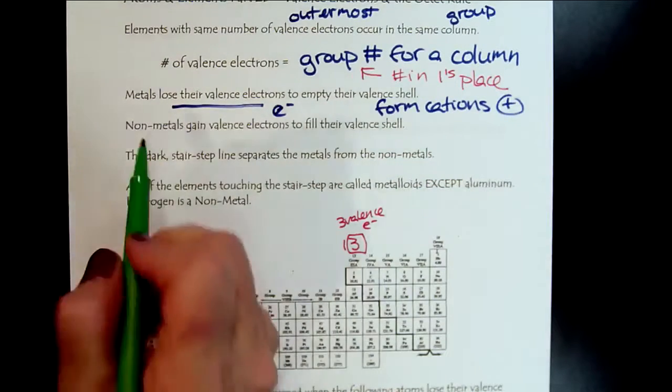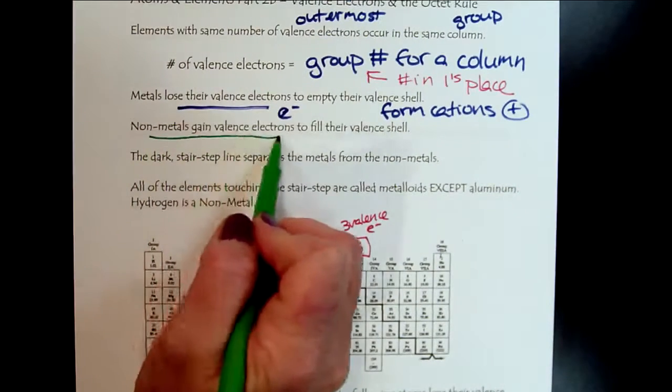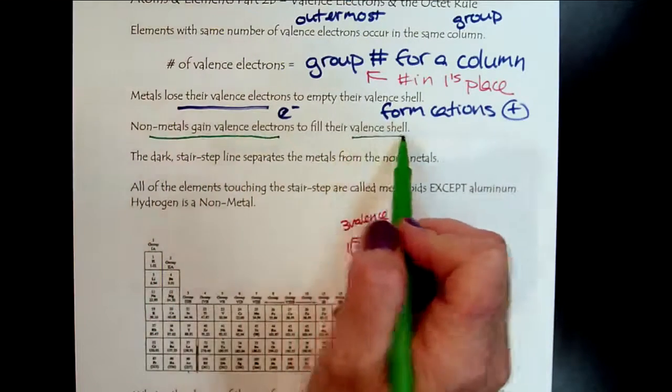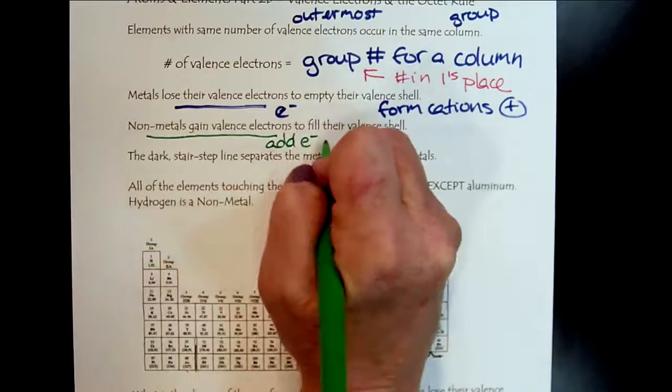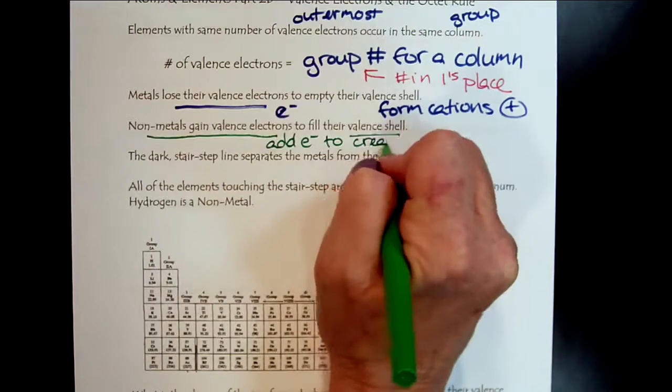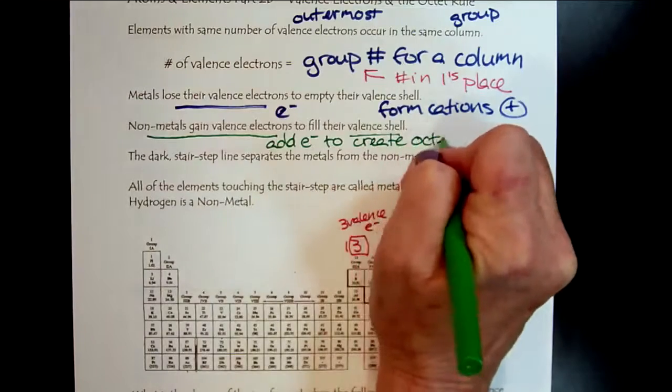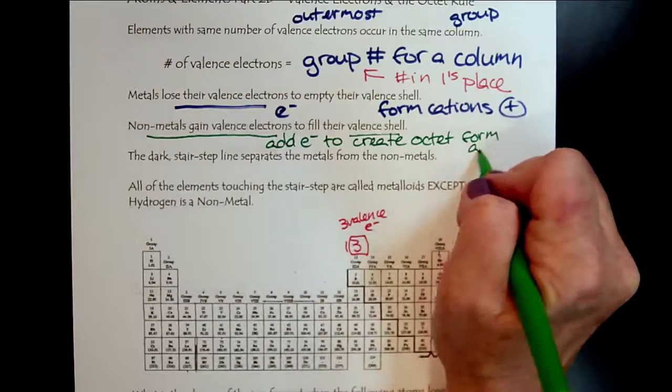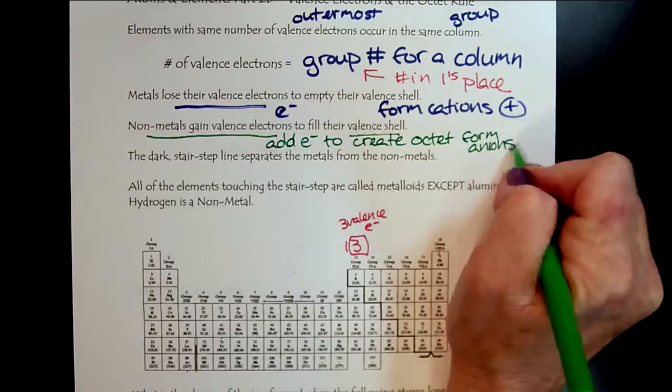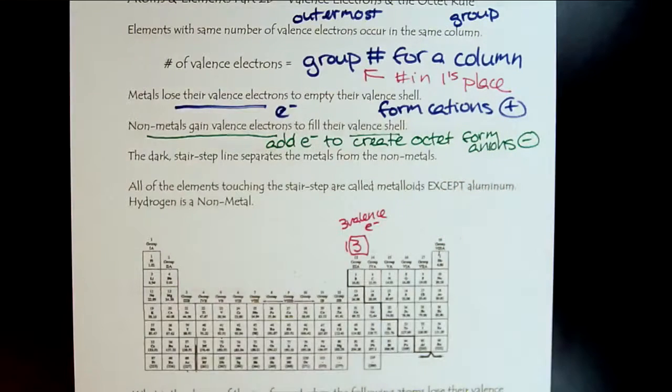Nonmetals gain valence electrons to fill the valence shell. We're going to add electrons to create octet. By gaining electrons we form anions, which are negative.